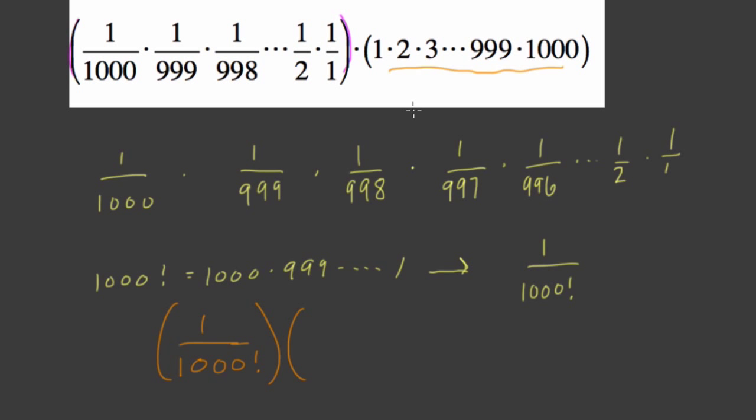We commuted all the numbers. We switched the order. It's still the same thing. So what are you going to get if you have 1,000 factorial times 1 over 1,000 factorial? What is that?